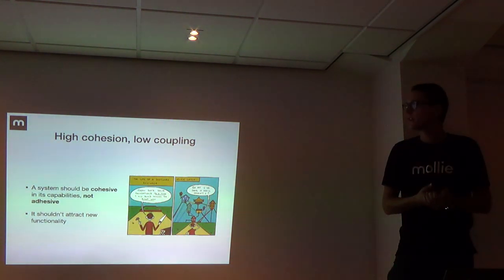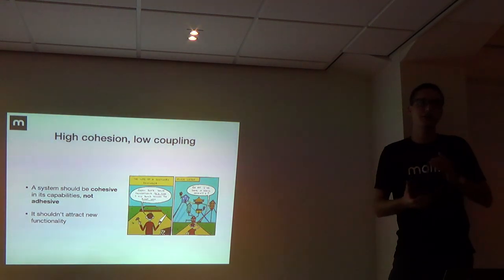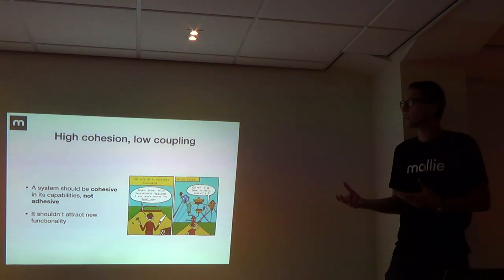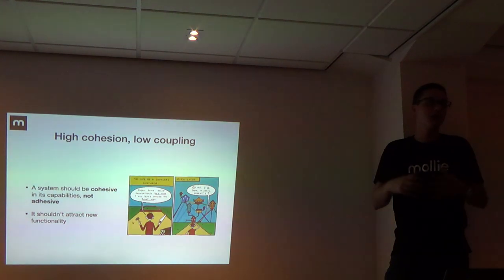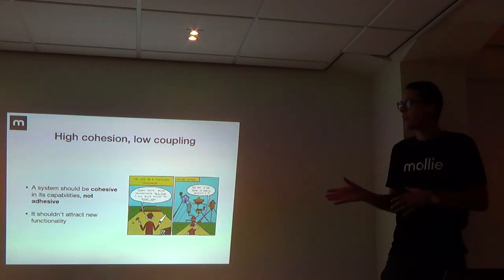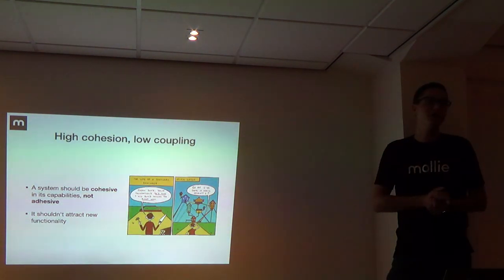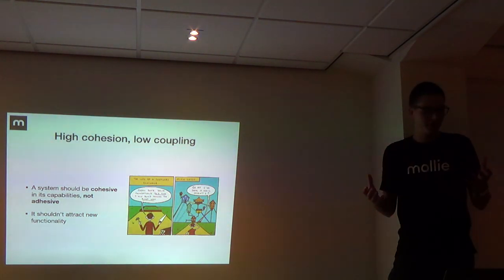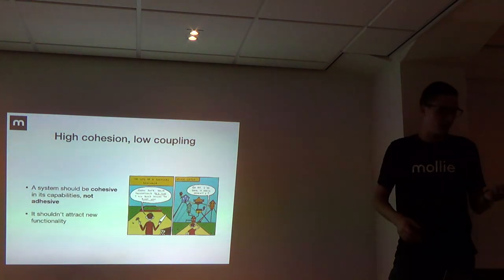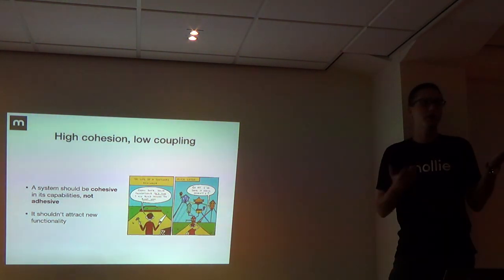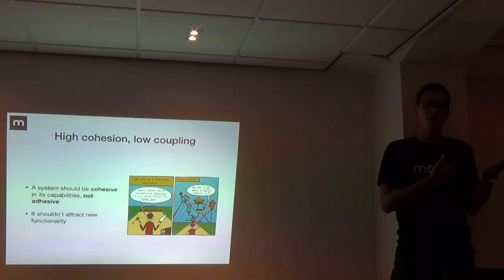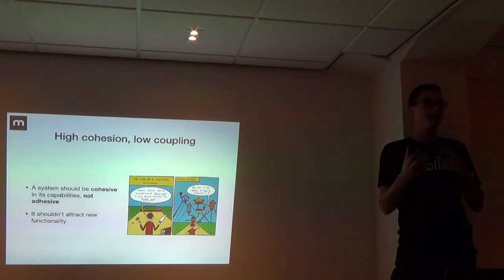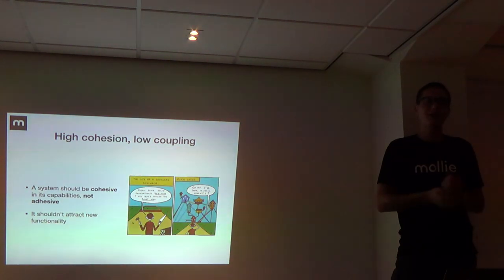A system should be cohesive in its capabilities - it should work together, serve the same goal. But it should not attract all new functionality like the plague - everything building on top of it. This is very dangerous because often it's very easy when you have a certain system to just put something on it because it kind of works the same way. You know, 'I already have that consumer object, I have emails - I can build a notification system on top.' But wait - that's kind of not the point. It goes two ways.